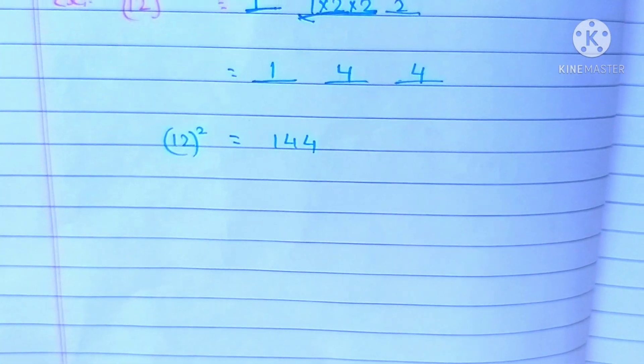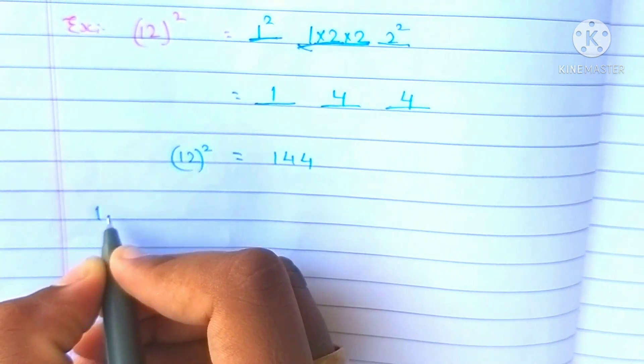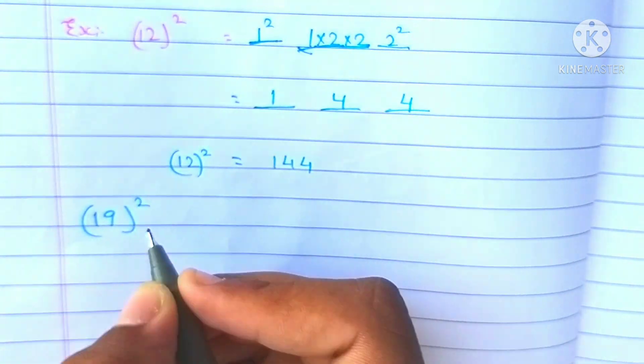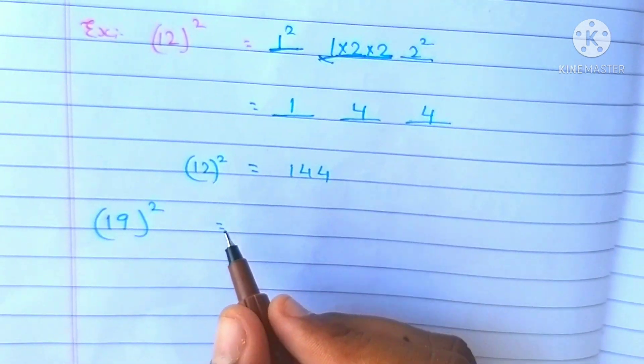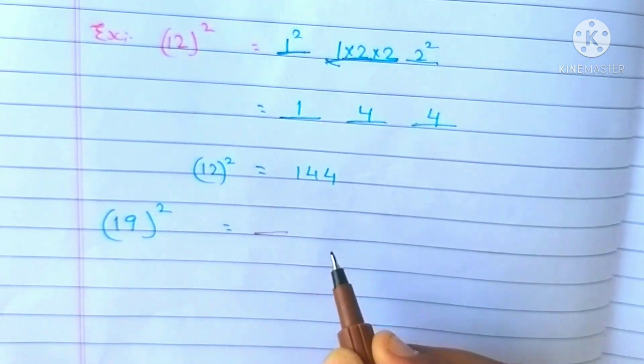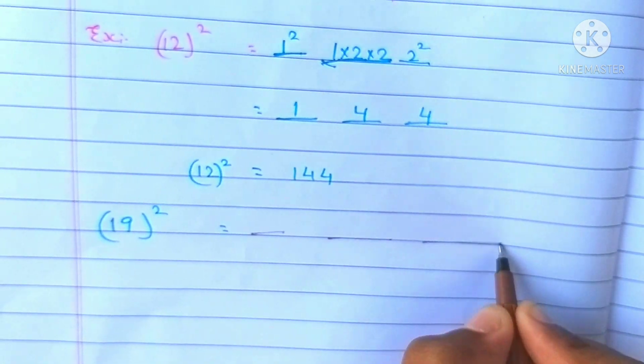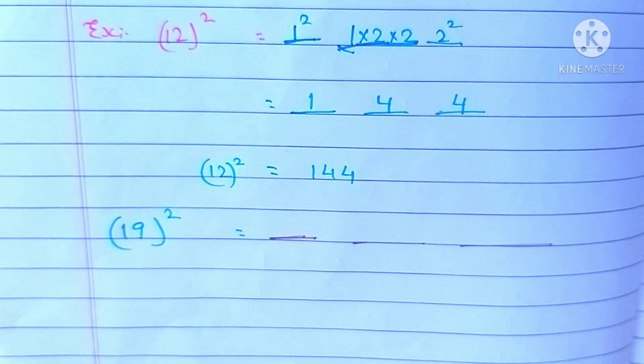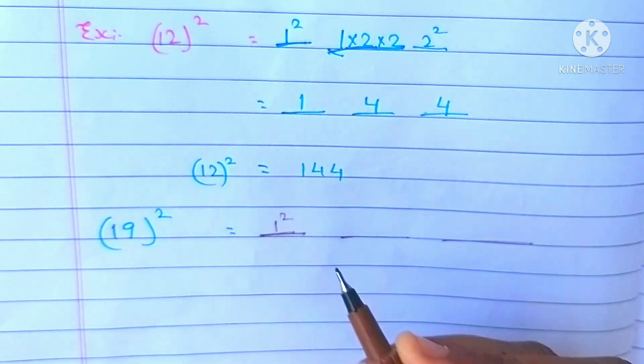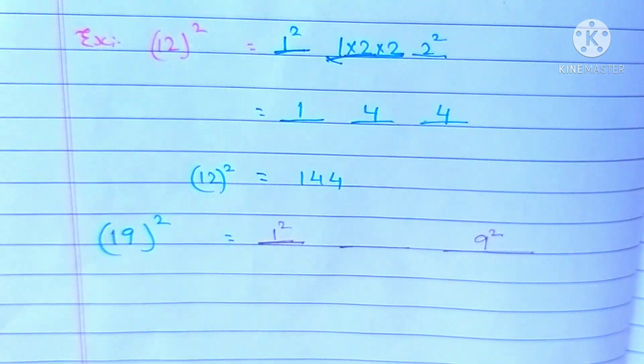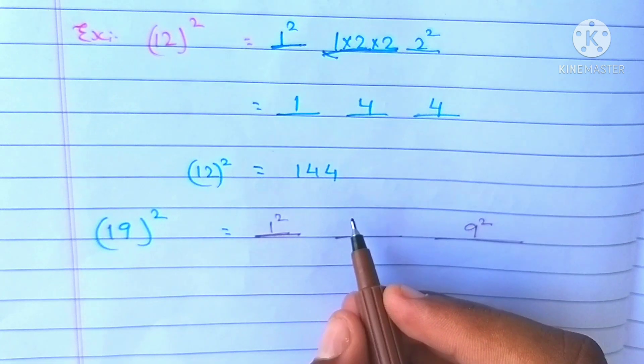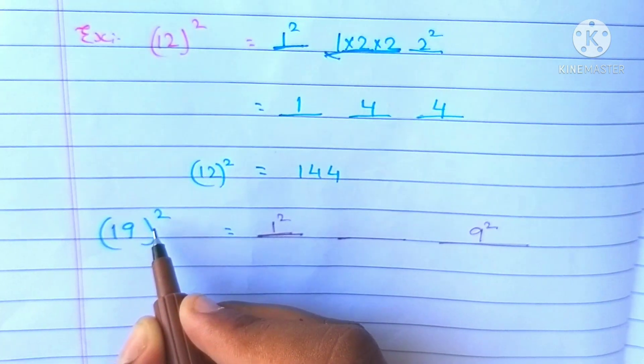We try another example. Here, we divide into 3 parts. In the first part, 1 square. In the third part, 9 square. In the second part, 1 into 9 into 2.